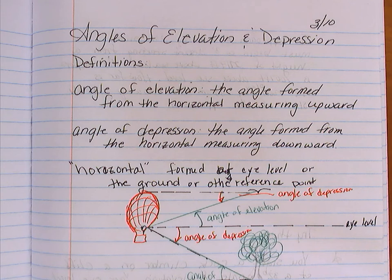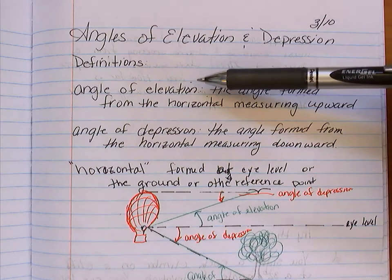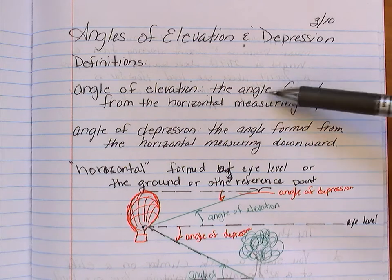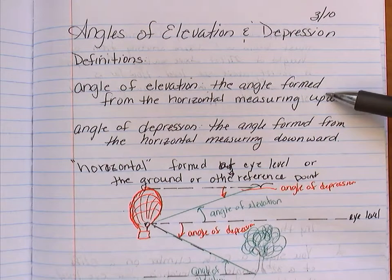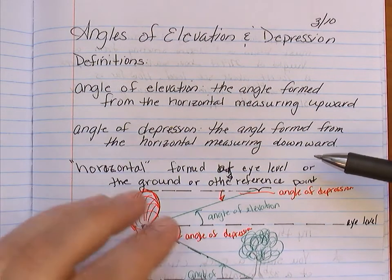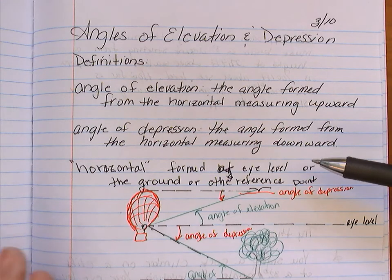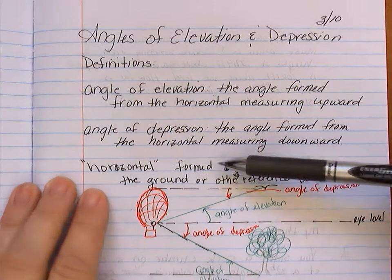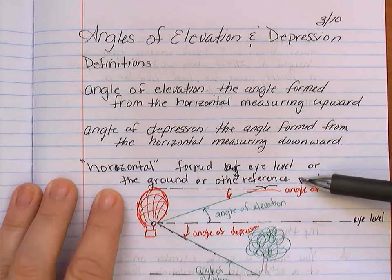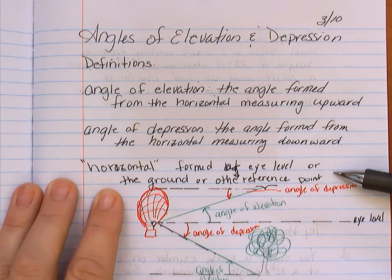The topic of this lesson is angles of elevation and depression. So first I want to start by defining them. An angle of elevation is the angle formed from the horizontal measuring upward. And the angle of depression is the angle formed from the horizontal measuring downward. So the horizontal can be formed at eye level or at ground level or at some other reference points.